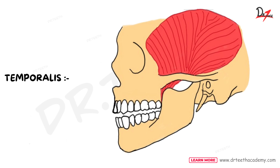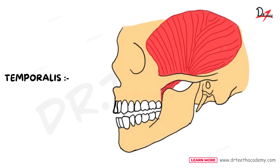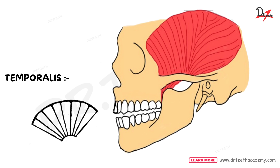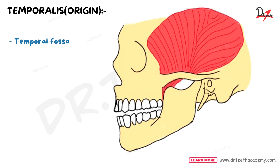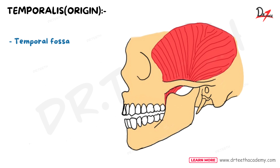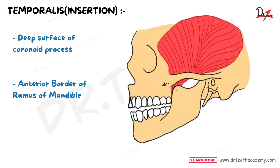Next, we'll discuss the temporalis muscle. Focusing on its shape, it is a fan-shaped muscle — not a ceiling fan, but a hand fan like those from the 90s. Talking about its origin, it originates from the temporal fossa and inserts into the deep surface of the coronoid process and the anterior border of the ramus of mandible.